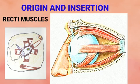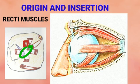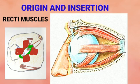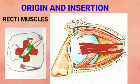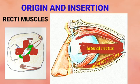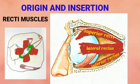Regarding the origin and insertion of the 4 recti muscles: all 4 recti muscles arise from the annulus of Zinn. The medial rectus, inferior rectus, lateral rectus, and superior rectus originate from the corresponding sides of the ring and then follow the corresponding walls of the orbit. The medial and lateral recti follow the medial and lateral walls. The inferior rectus remains in contact with the orbital floor, while the superior rectus alone is separated from the orbital roof by the levator palpebrae superioris.